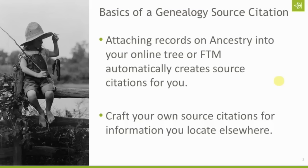I do a lot of my research online through Ancestry, with more than 16 billion records online. But when proving something about a particular person, the Genealogical Proof Standard requires a reasonably exhaustive search, which means sometimes I have to go elsewhere. Sometimes Ancestry only has an index of a particular record, so I have to write to the state or order a copy of the original marriage or death certificate.